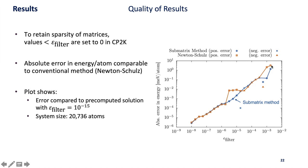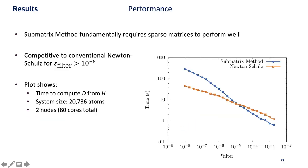On to performance. The submatrix method fundamentally requires sparse matrices because otherwise your submatrices get very big. We see when we have a very small epsilon filter the submatrix method takes much longer.